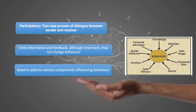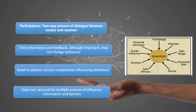We need to address through communication various components that influence behavior, and a participatory approach does not necessarily take care of all these. Even if it does, it does not necessarily account for multiple sources of influence, information, and barriers. This means that each person in the dialogue — the sender and the receiver — is also a source of influence and information and is also a recipient. So these arrows are not one-way; they are two-way between the sender and the receiver, not only in terms of information and feedback but various other components.